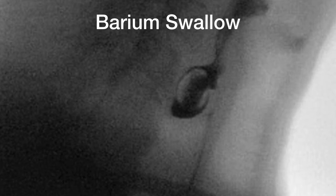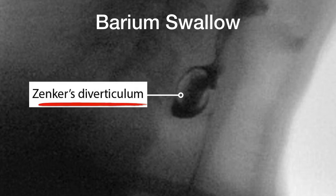Here is the Zenker's diverticulum in detail. This is an outpouching of the mucosa between the inferior pharyngeal constrictor muscle and the cricopharyngeal muscle.